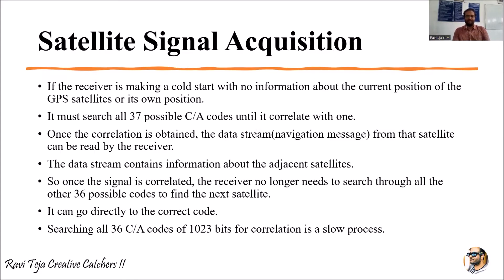The adjacent satellite information is contained in that navigation message or data stream. Once the signal is correlated, the receiver no longer needs to search through all 36 or 37 possible codes to find the next satellite — it can go directly to the correct code.